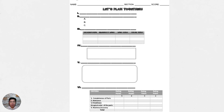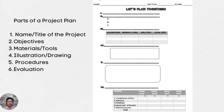Are you ready? Let us now check your work. Here are the parts of a project plan. Number one is the name or the title of the project. Two, the objectives. Three, materials and/or tools. Four, illustration or drawing. Five, procedures. And six, evaluation. I hope you got it right.